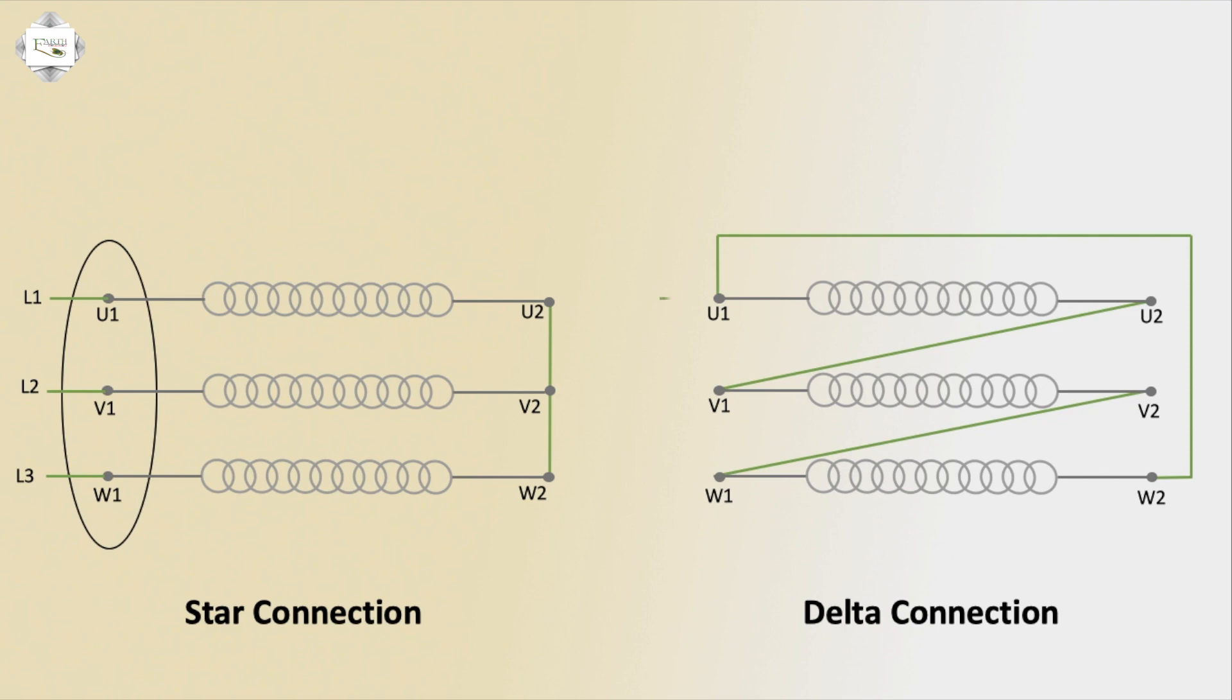For the 3-phase motor delta connection: L1 connects to U1 and W2, forming the first phase connection. L2 means second phase yellow, which connects to V1 and U2 for the second phase connection.